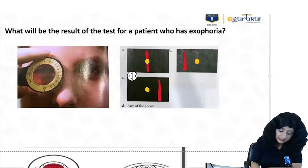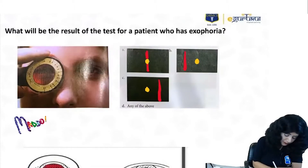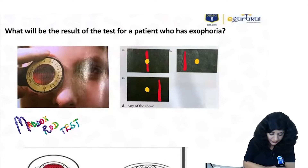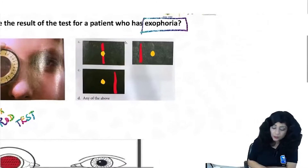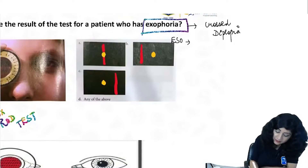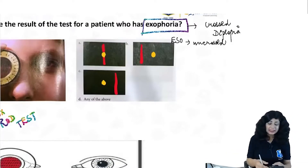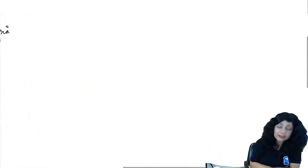So what is this test? All of us know that this test is the Maddox Rod test. And what will be the result of a patient who has exophoria? We already know that in exophoria we will have crossed diplopia, and in cases of esophoria we will have uncrossed diplopia. So we need to tell the interpretation — it is the Maddox Rod test. Now, first of all, try to understand why we get crossed and uncrossed diplopia.